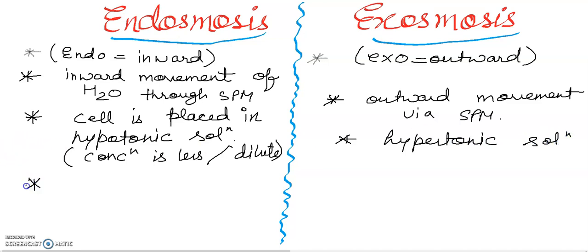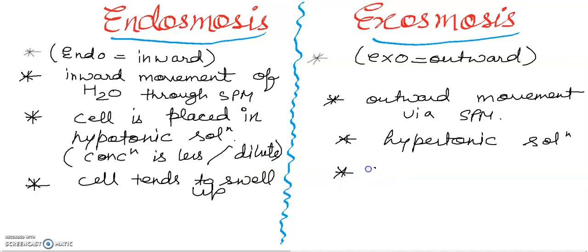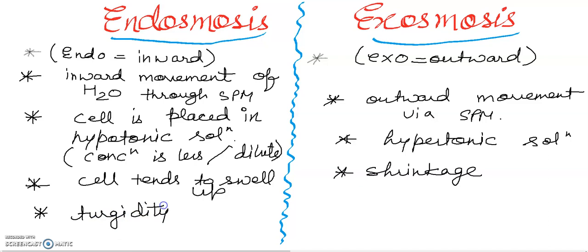जब endosmosis होगी तो cell में क्या होगा? Cell tends to swell up — यहाँ पर swelling आएगी। और exosmosis में shrinkage होगा। Swelling इसलिए होगी क्योंकि inward flow of water हो रहा है। Cell अपनी turgidity maintain करेगा — turgidity achieved. It leads to turgidity in plant cells.